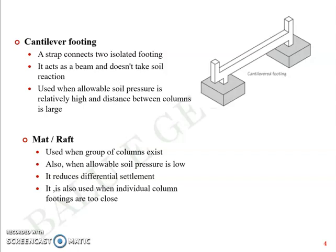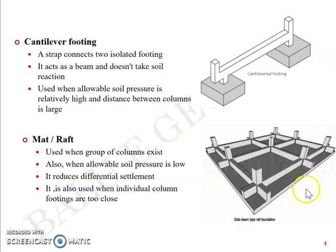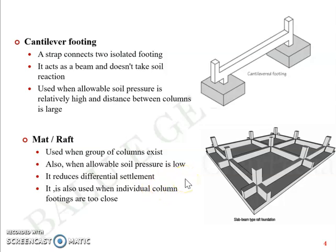Another example is mat or raft foundation. They are used when there is a group of columns that the superstructure houses, and also when the allowable soil pressure is very low, when you have loose pockets, or when one part of the soil has much lower shear strength compared to another. It runs all over and houses the primary and secondary beams over which you cast the columns upward. Another advantage of mat or raft foundation is that it reduces differential settlement, as discussed in the previous module.